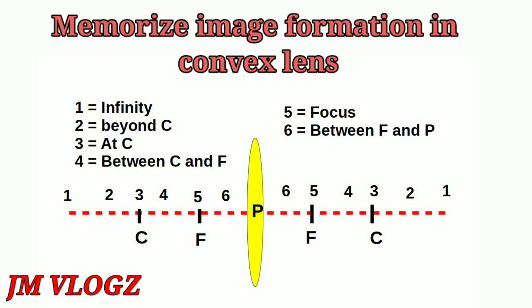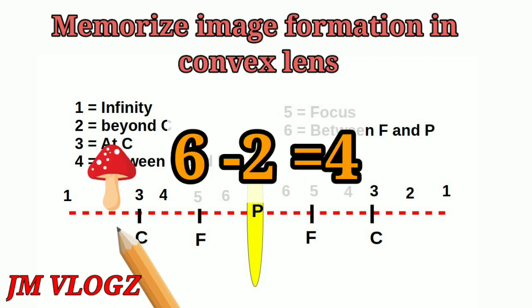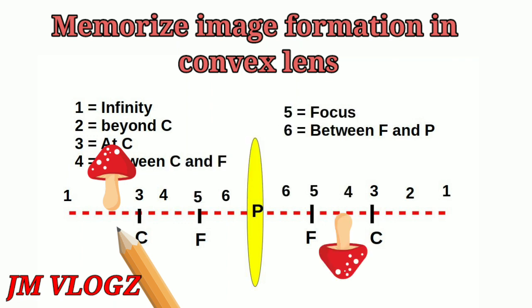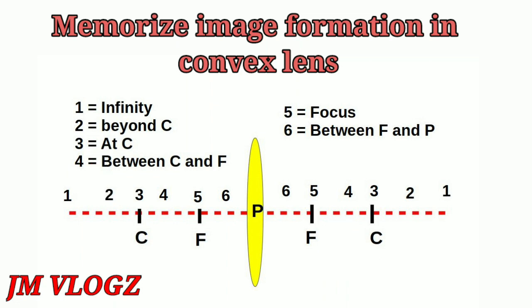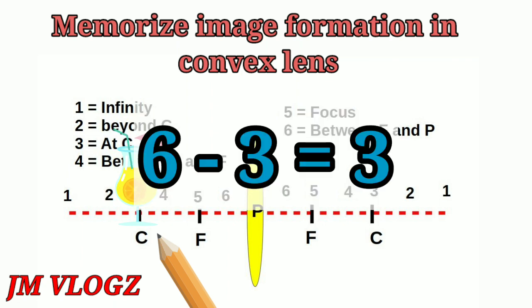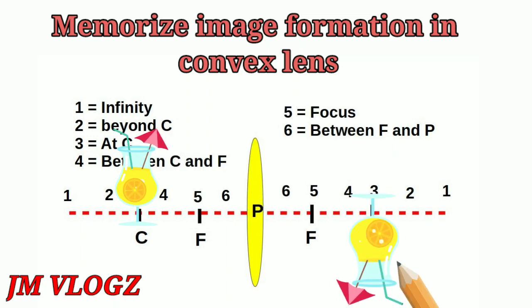Next, we keep the object at position 2. Then 6 minus 2 equals 4, so the position of the image is between focus and center of curvature on the other side. Next, we place the object at C, which is point 3. Then 6 minus 3 equals 3, so the image is at center of curvature itself.